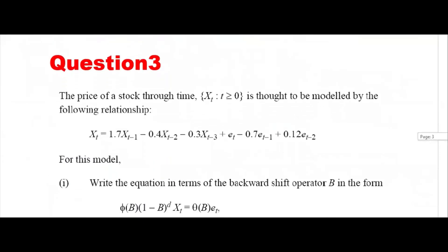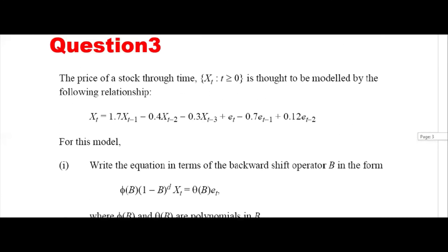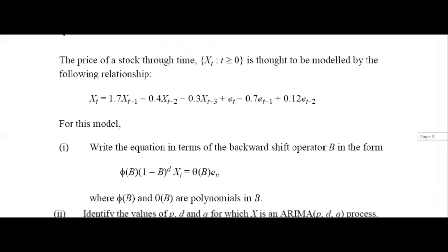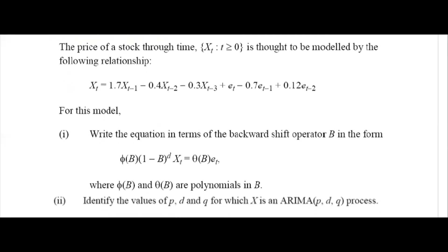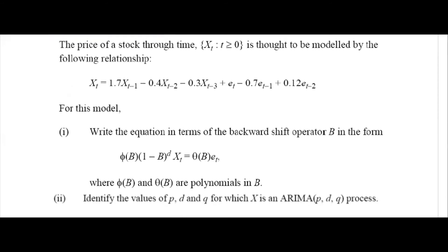Now let's take another question. The fourth question: the price of a stock through time is modeled by the following relationship. Write the equation in terms of the backward shift operator in the form given. This is an ARIMA process — there are unit roots which will be captured here, with one polynomial on the left and one on the right.